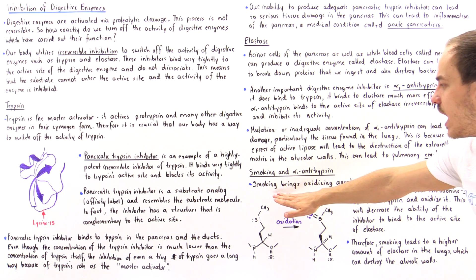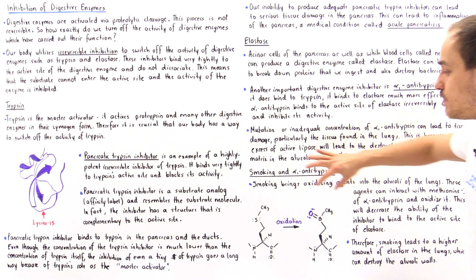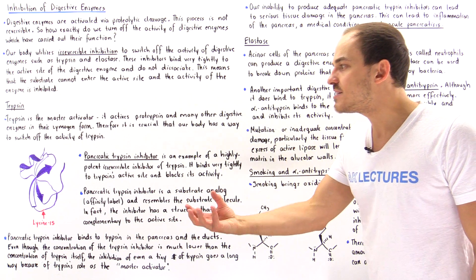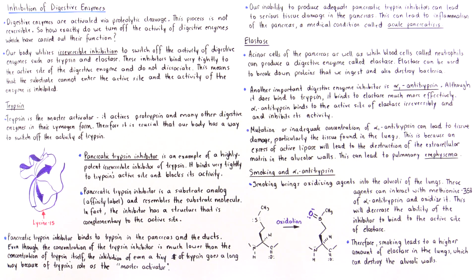So we see that smoking brings oxidizing agents into the alveoli of the lungs. These agents can interact with the methionine-358 of alpha-1 antitrypsin and oxidize it. And this will decrease the ability of the inhibitor to bind into the active side of the elastase because it's this methionine-358 that is responsible for actually interacting with that active side of elastase.